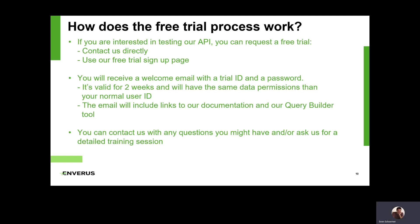Once you've contacted us and we've initiated the free trial process, you will receive a welcome email with a trial ID and password — you'll need those to activate the API. It's normally valid for two weeks. In that welcome email, there will also be helpful links, including the documentation and a link to our Query Builder tool, which is a good tool to play around with the API in a testing scenario and will help you understand how it works.